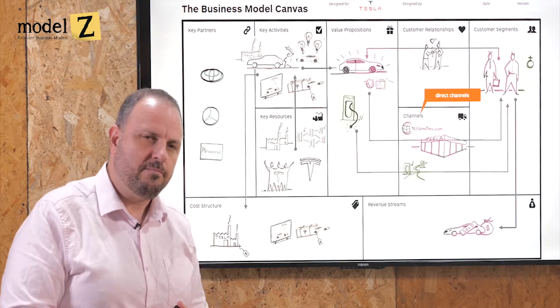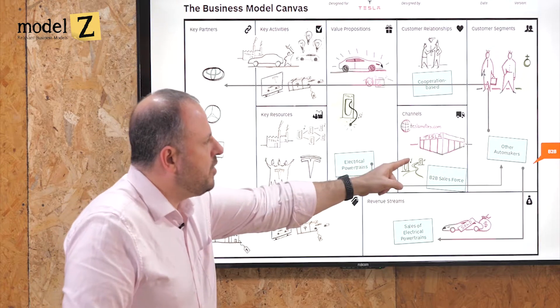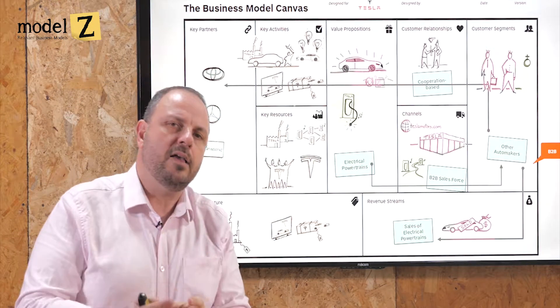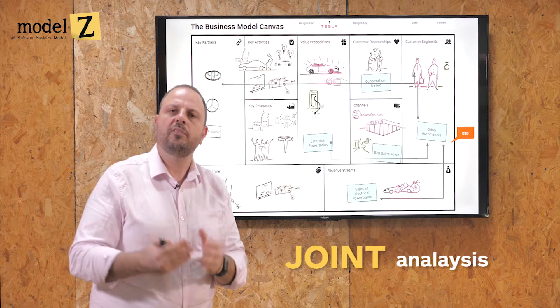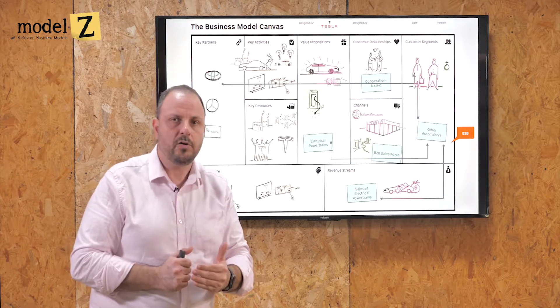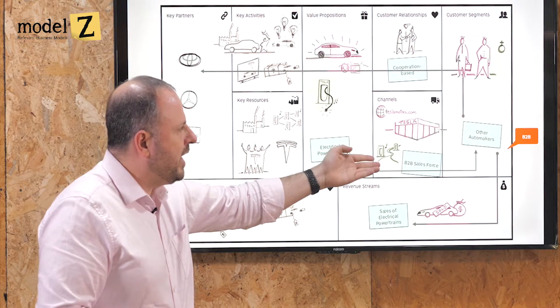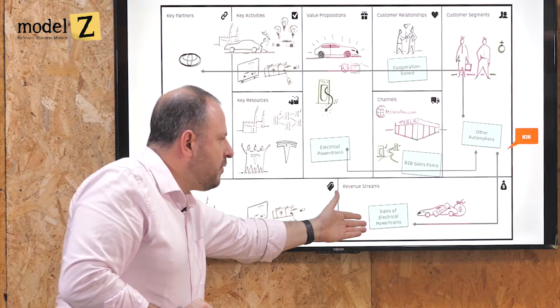But that's not the end of the story. Tesla has another value chain in its business model — its B2B chain. Other automakers are being locked into a cooperation-based, joint-venture kind of relationship. Here's a tip: whenever you hear the word 'joint' — whether joint development, joint analysis, joint venture, or whatever — it's a lock. It works really well because both you and your customer or partner are contributing essence and value into the model. Tesla also sells electrical powertrains to other automakers and uses a B2B sales force — a different channel for a different value.